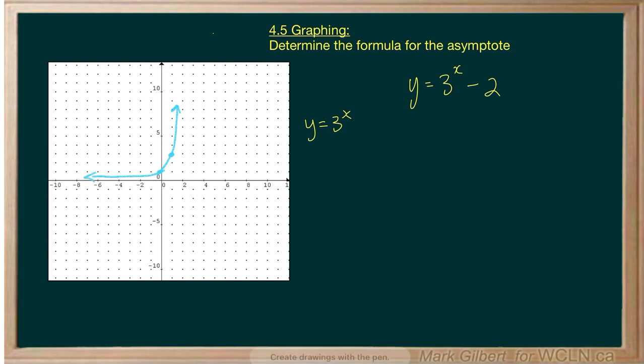And this equation, this minus 2, means we're going to move this graph down 2 units. The asymptote, which is currently the x-axis, will also move down 2 units.